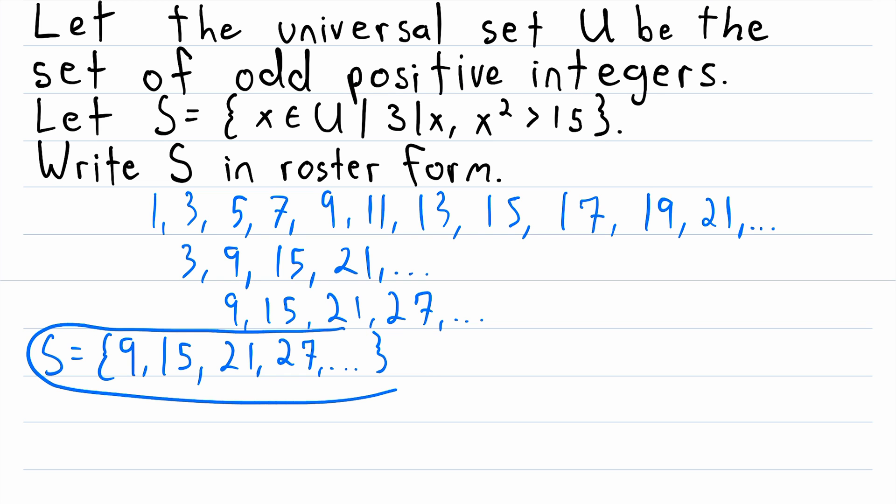Just by the definition of S, this is the set of all odd positive integers that are multiples of 3, whose squares are greater than 15. But that's it, that is S in roster form. So remember, all we did was we looked at the set builder definition of S, and then one by one, we applied these conditions and sort of stacked them on top of each other.